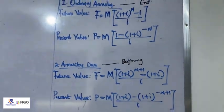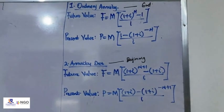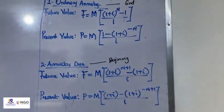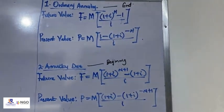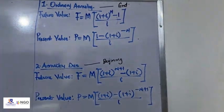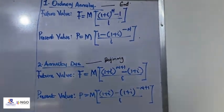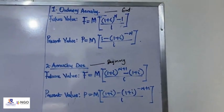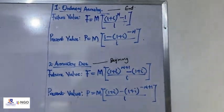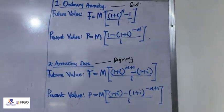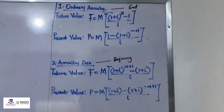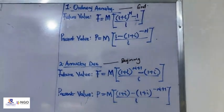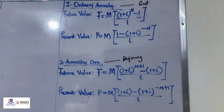The formulas are: future value of an ordinary annuity, present value of an ordinary annuity, annuity due, future value of annuity due, and present value of annuity due. It's not complex — it's just formulas that will be applied when all these processes are done in practice.